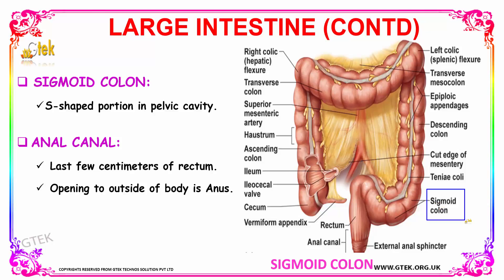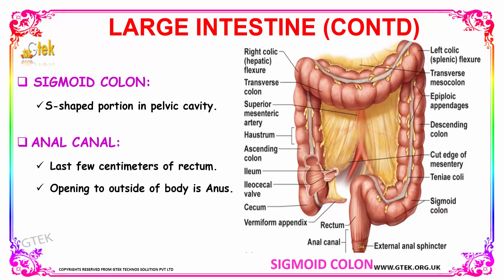Then there is the descending colon, which leads toward your anus, followed by the sigmoid colon — an S-shaped portion in your pelvic cavity. Then we have the anal canal, which is a few centimeters of the rectum, and the opening to the outside of the body is known as your anus. You can see that your ileum connects into your cecum, where you also have the appendix, followed by the ascending colon, transverse colon, descending colon, sigmoid colon, rectum, and anal canal.